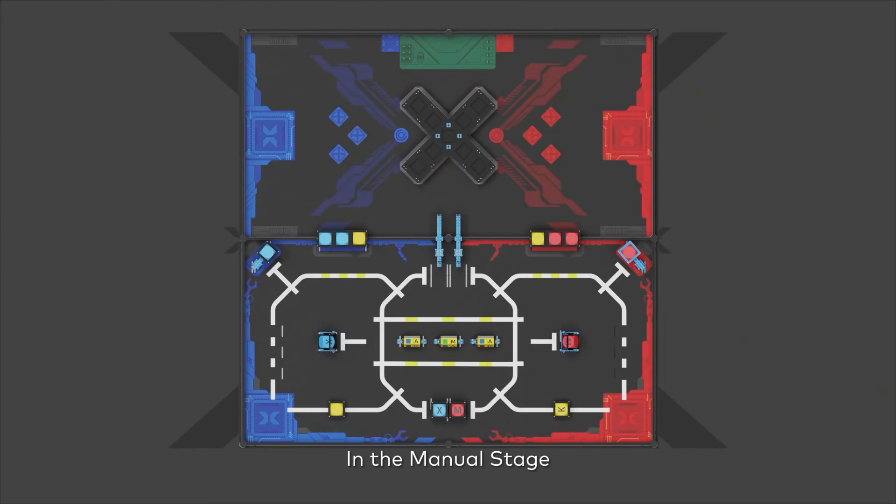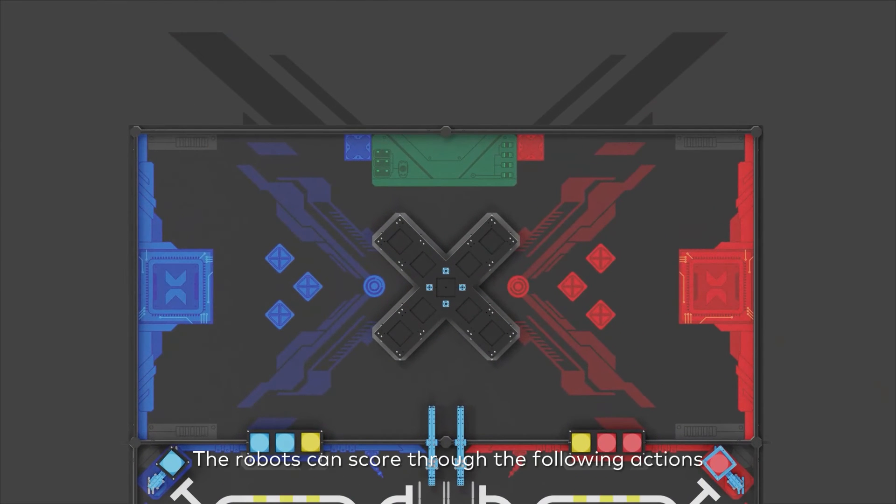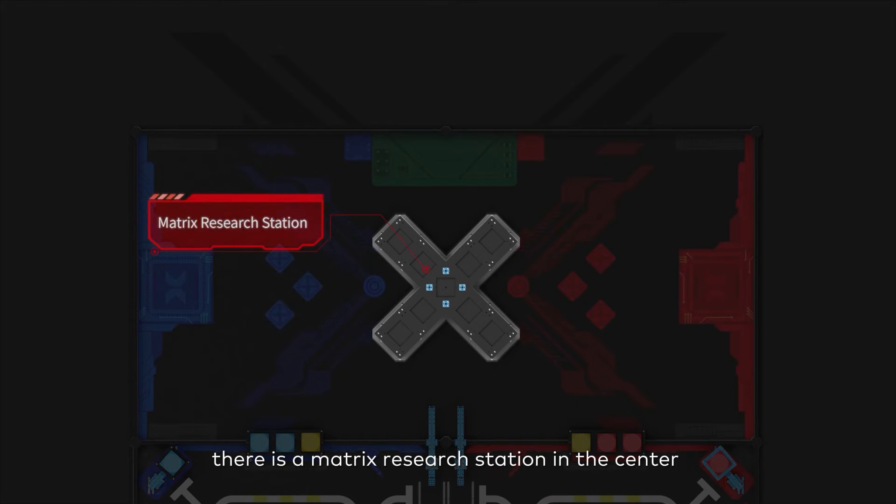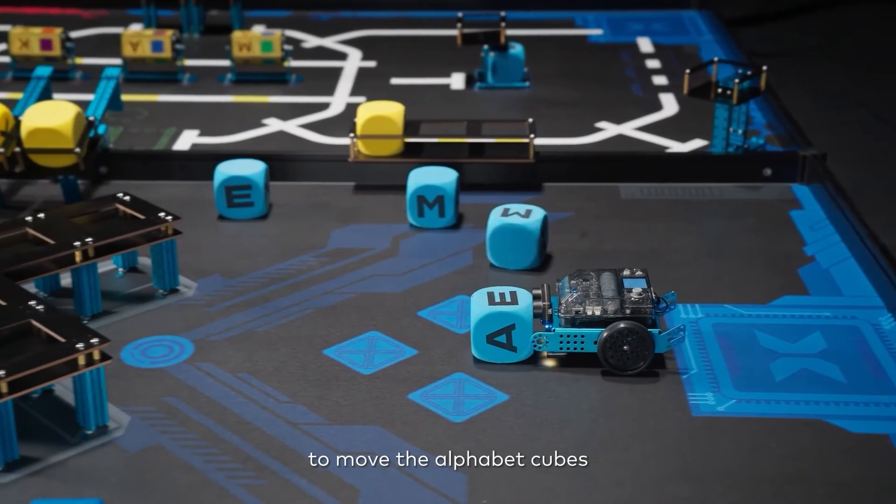In the manual stage, the robots can score through the following actions. In manual area, there is a matrix research station in the center where the robot is remotely controlled to move the alphabet cubes.